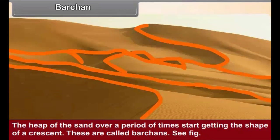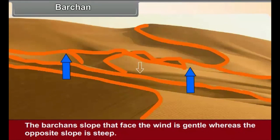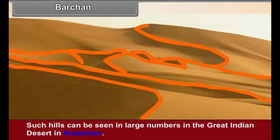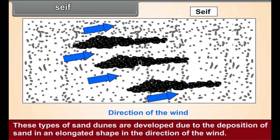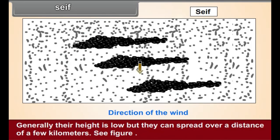See figure 9.14. The barchan slope that faces the wind is gentle, whereas the opposite slope is steep. Such hills can be seen in large numbers in the Great Indian Desert in Rajasthan. Seif: The word 'seif' in Arabian language means a sword. These types of sand dunes are developed due to the deposition of sand in an elongated shape in the direction of the wind. Generally their height is low, but they can spread over a distance of a few kilometers. See figure 9.15.